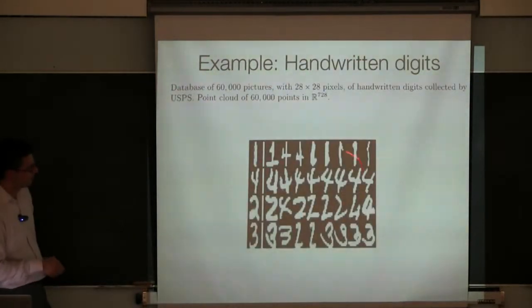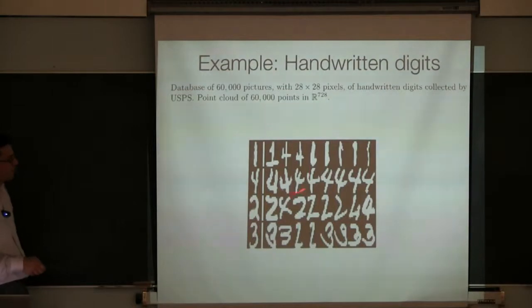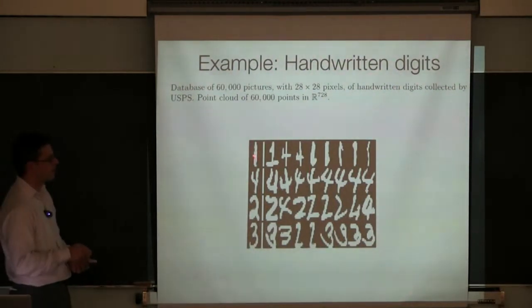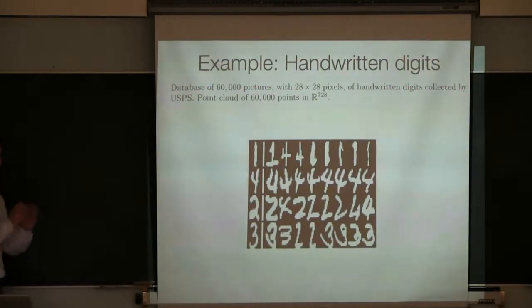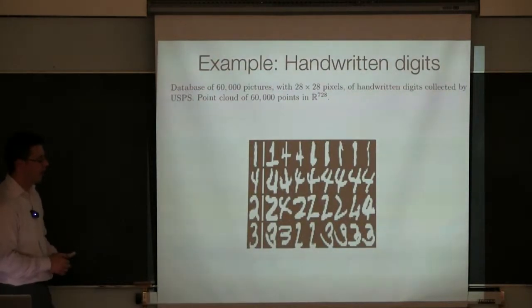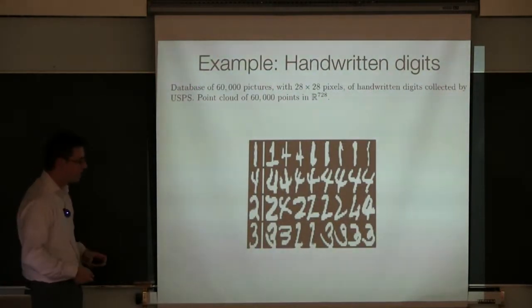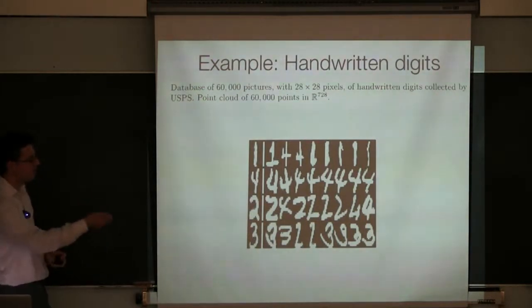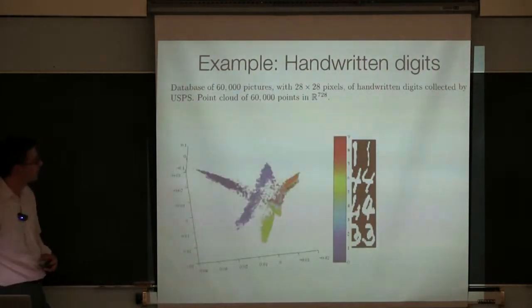You can do this for handwritten pictures of digits. These are pictures from 0 to 9 and people are interested in mapping, in learning the function from each of these images to the corresponding digit, for example to read checks automatically, to read zip codes on letters. This is now standard, you go to a deposit a check in the automatic teller machine, you put in the check, it reads the amount of the check automatically.